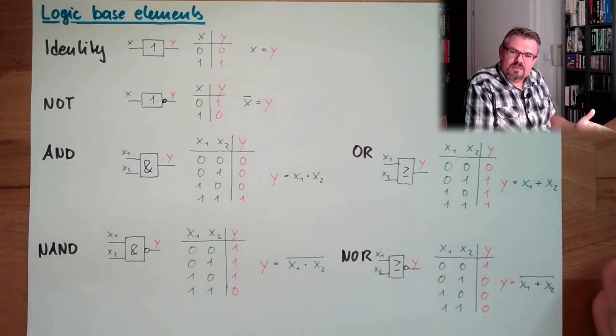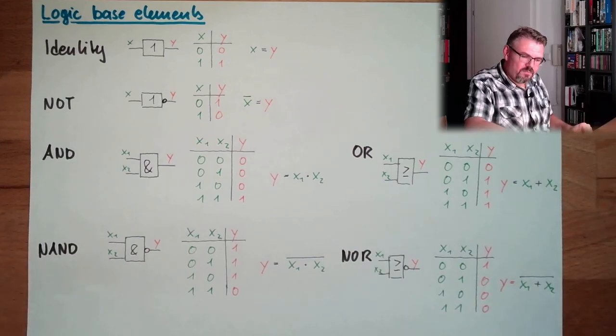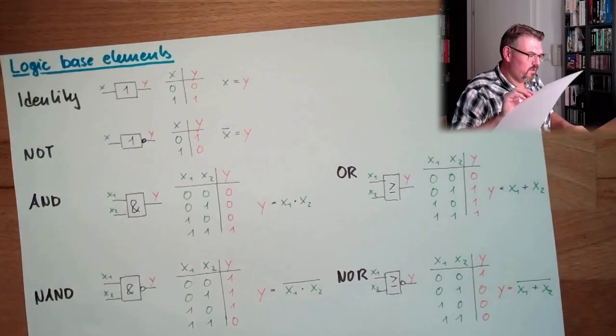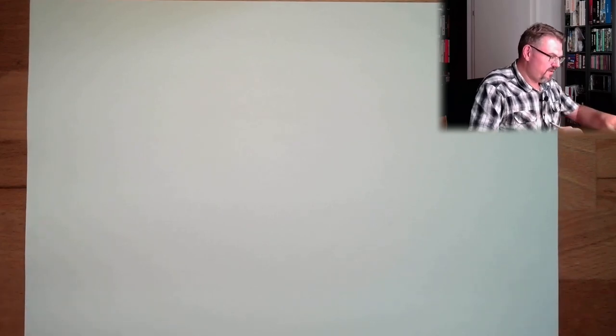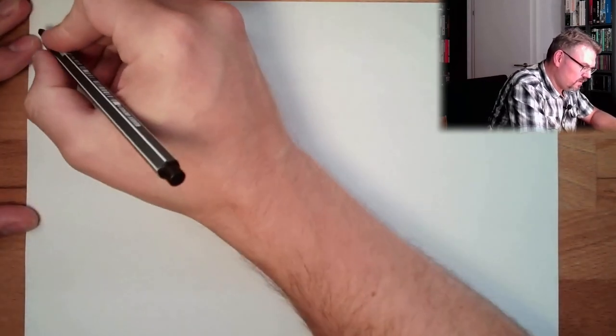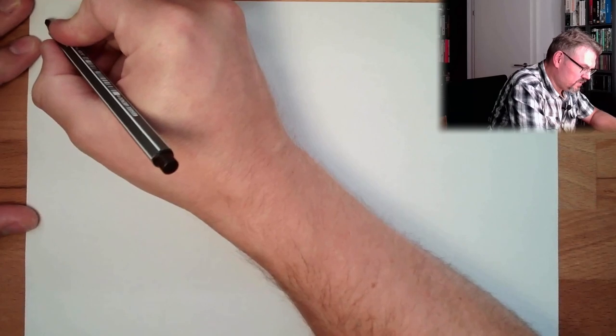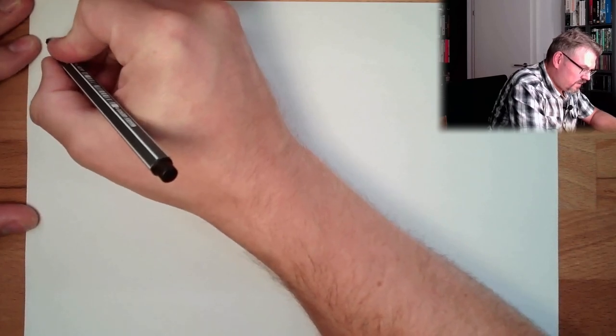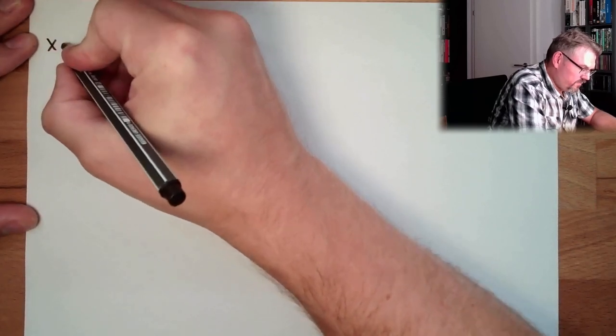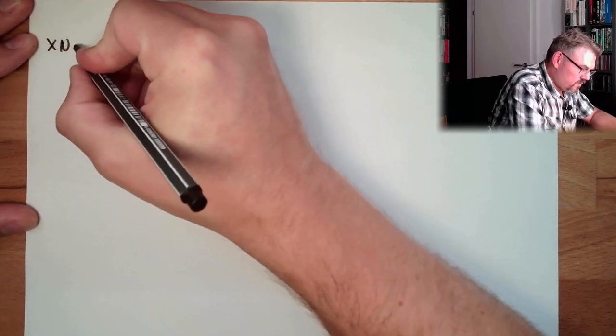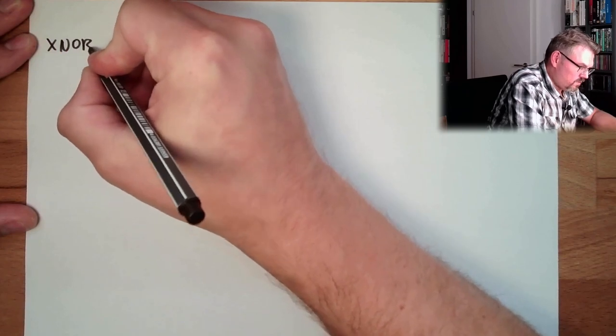These are the prime base elements. There are also extended base elements. We have an XNOR — exclusive NOR.